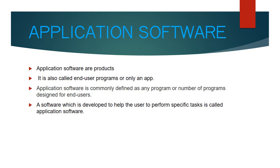We have completed the system software types. Now we have application software. Application software is software used by the end user. The end user performs specific tasks using it. Application software is developed by a developer for a particular task. Each application software program is entirely different. The specific task we need is met by that kind of application software.